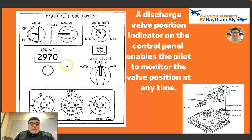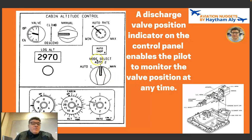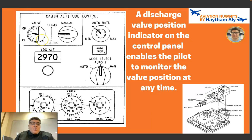Regarding the cabin altitude panel or pressurization panel, a discharge valve (outflow valve) position indicator on the control panel enables the pilot to monitor the valve position at any time, whether auto or manual is selected. On sophisticated modern airliners, the pilot monitors the outflow valve position on the ECAM or EICAS display.